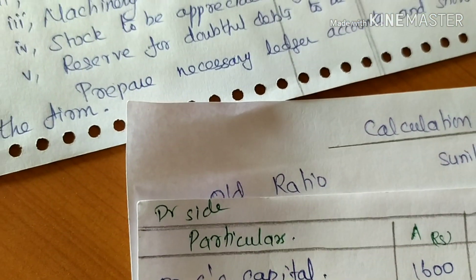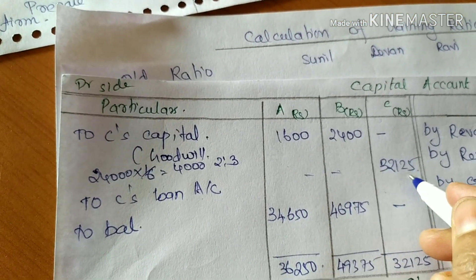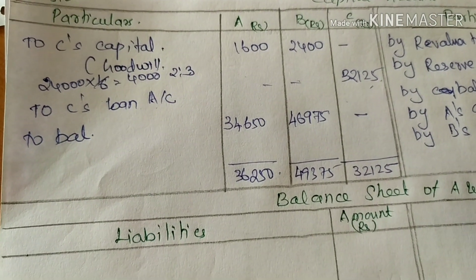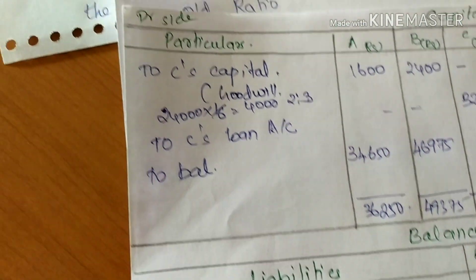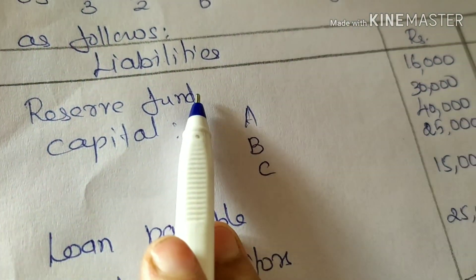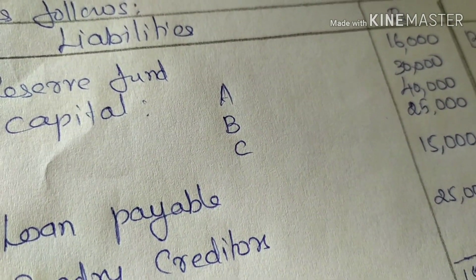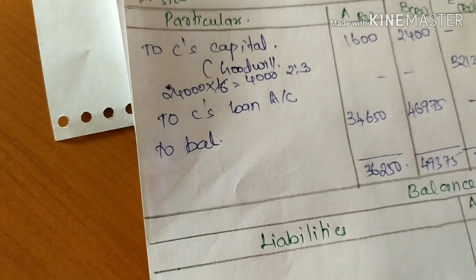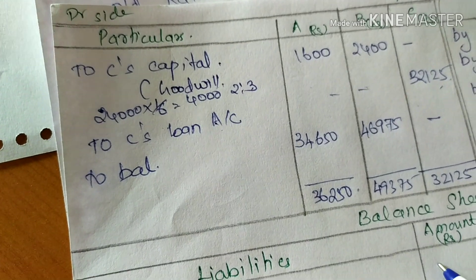C's retirement: the capital account balance is converted to C's loan account. A and B continue the firm. On the balance sheet liability side: reserve fund, capital of A = 34,650 and capital of B = 46,975.